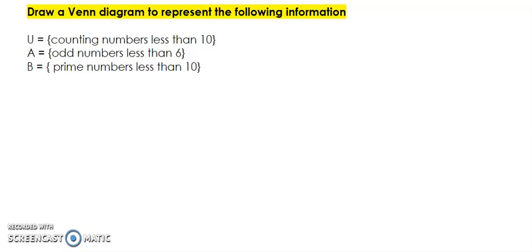So let us look at the instructions and it says draw a Venn diagram to represent the following information. The universal set is the set of counting numbers less than 10. Set A is the set of odd numbers less than 6 and Set B is prime numbers less than 10.